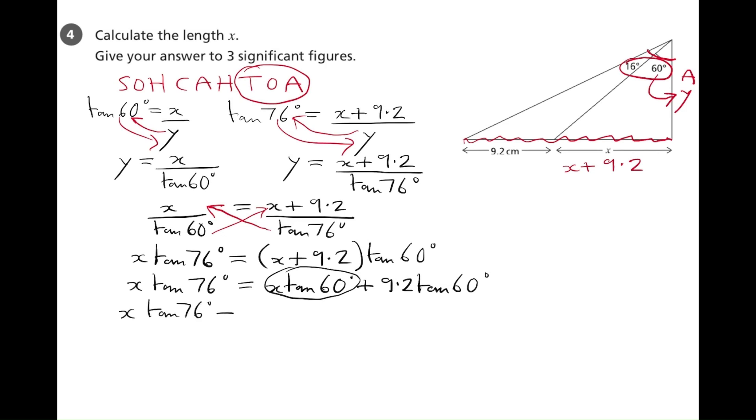So, x tan 76 minus x tan 60 gives 9.2 tan 60.